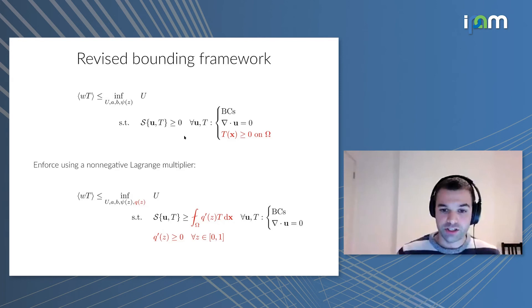The point is that now this q enters the constraints linearly, again, as before. So once again, this optimization problem is linear, and we can plug it into the computer and ask it to optimize u, the balance parameters a and b, the profile psi, and this Lagrange multiplier q, and see what bounds we obtain.